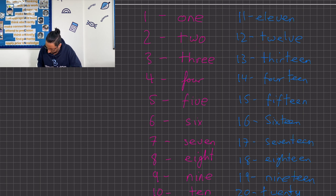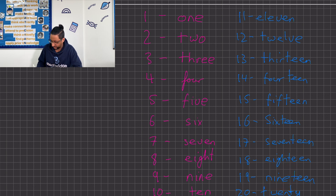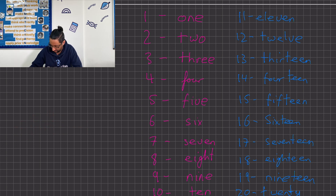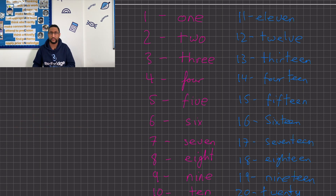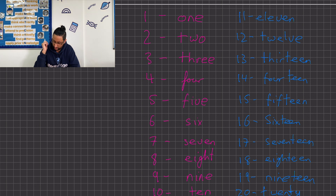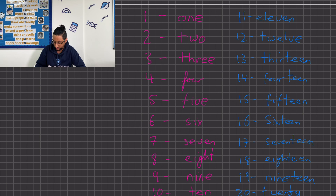Be careful with 19 — a lot of people miss out the 'e' and write 'ninteen', which obviously isn't correct. Also notice how 20 is linked to two and 12. Just take a second to look over those before we move on to how these relate to 20, 30, 40, and so on.